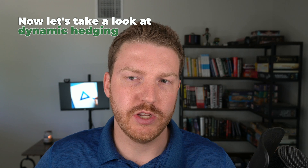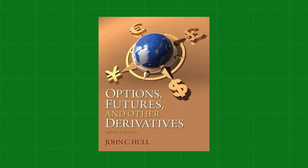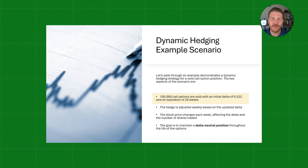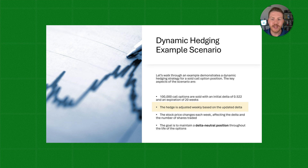Now let's take a look at a dynamic hedging example scenario taken from John Hull's famous textbook, Options, Futures, and Other Derivatives. In this example, we are playing the role of someone who has sold short 100,000 call options and wants to maintain a Delta neutral portfolio. These options are set to expire in 20 weeks and have an initial Delta of 0.522. We're going to adjust this hedge every week to keep our Delta as close to zero as possible, chasing the Delta neutral position throughout the life of the options.